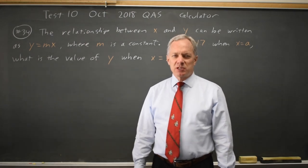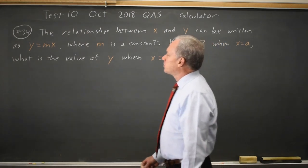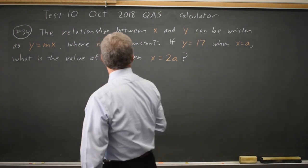This is question 34. College Board is giving us a direct variation problem, y equals mx, where m is a constant.